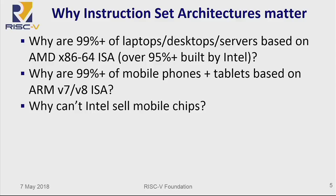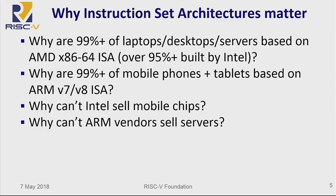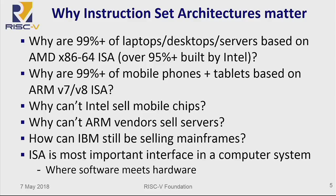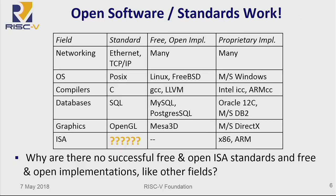And why isn't Intel really able to sell into the mobile market? This is changing, but it's taken a heck of a long time. But why are there not ARM devices in server space? And how is IBM still selling mainframes? Fundamentally, the ISA is the most important interface in a computer system — it's where hardware meets software. And it's because of that that instruction sets really do matter. So if that's the case, why does pretty much every other interface in the computing systems we build have open standards associated with them, when we've just agreed that the ISA is the most important one, and it doesn't?